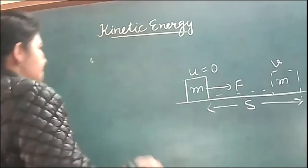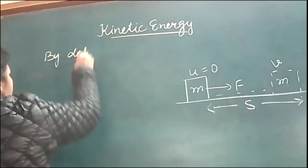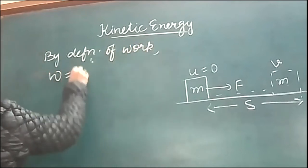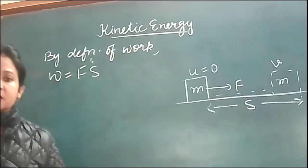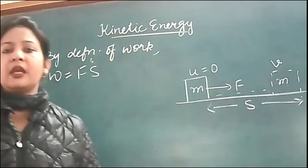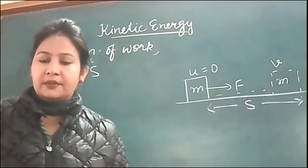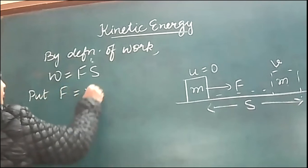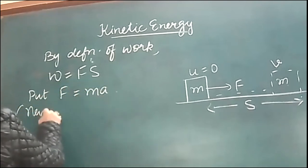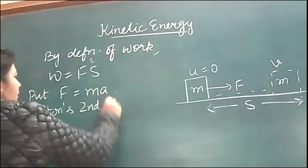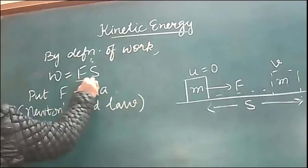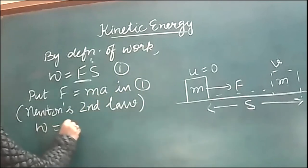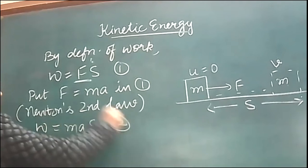Since we have allowed the object to move, the work done will be stored in the form of kinetic energy on account of its motion. Whenever we calculate any energy, we always start with work. By definition of work, W = Fs. We need not write cos 0 here because it is understood that force and displacement are in the same direction, so cos 0 is 1. According to Newton's second law of motion, F = ma, so substituting into equation 1, we get W = mas. We call it equation number 2.